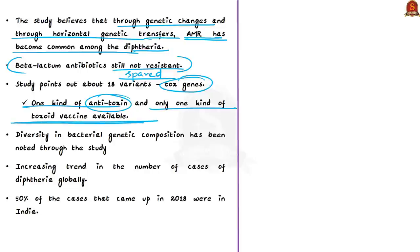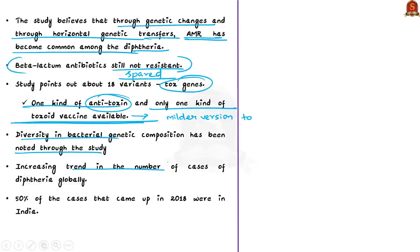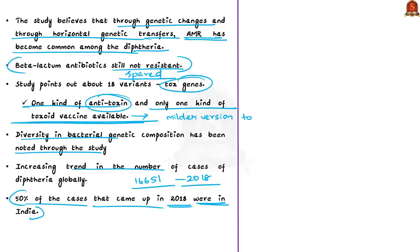A toxoid vaccine uses a milder version of the toxin to elicit an immune response, making the body familiar with the diphtheria toxin. There is also observed diversity in bacterial genetic composition. There is an increasing trend in global diphtheria cases — 16,651 cases in 2018, double the average during 1996 to 2017. Fifty percent of 2018 cases were from India, which the author believes is testimony to the research on species diversity and other factors.